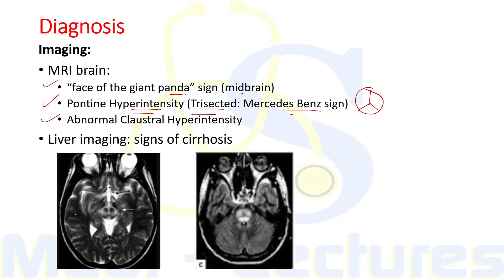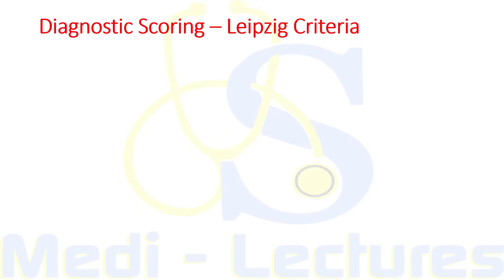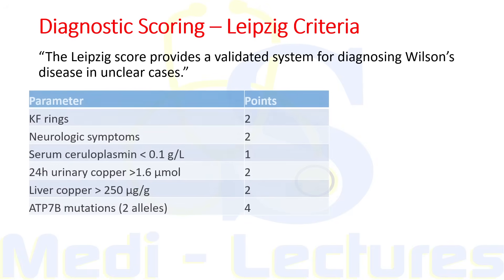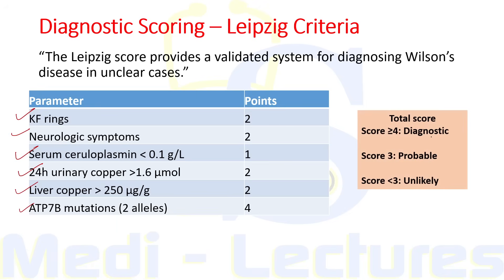The first image shows face of giant panda on midbrain and pontine hyperintensity as the Mercedes-Benz sign - these are the MRI signs of Wilson's disease. A diagnostic scoring system called the Leipzig criteria provides a validated system for diagnosing Wilson's in unclear cases. It includes parameters like KF ring, neurological symptoms, serum ceruloplasmin, 24-hour urinary copper, liver copper, and ATP7B mutation. A score of four or more is diagnostic, three is probable, and less than three is unlikely to be Wilson's disease.